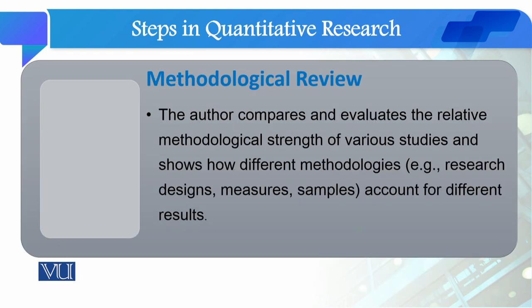The author compares and evaluates the relative methodological strengths of various studies and shows how different methodologies — for example, research designs, measures, and samples — account for different results. For example, how cross-sectional and longitudinal studies produce different results, or how probability versus non-probability sampling yields different results, or how using different tools for one variable produces different results.